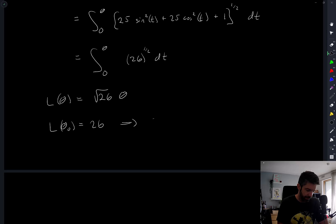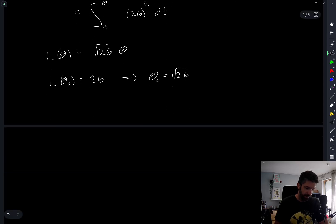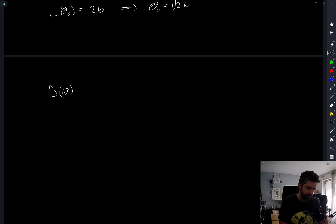So this implies theta naught is equal to root 26. But now we need to compute also D of theta. D of theta is just the distance between the point and the origin. So that's equal to X theta squared plus Z theta squared plus theta squared square root.